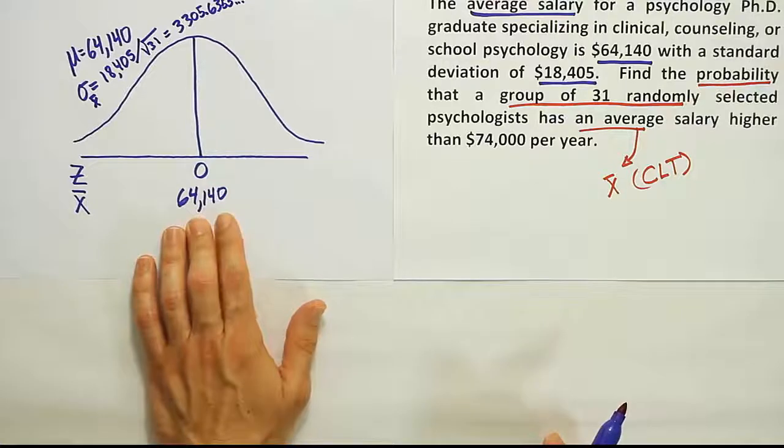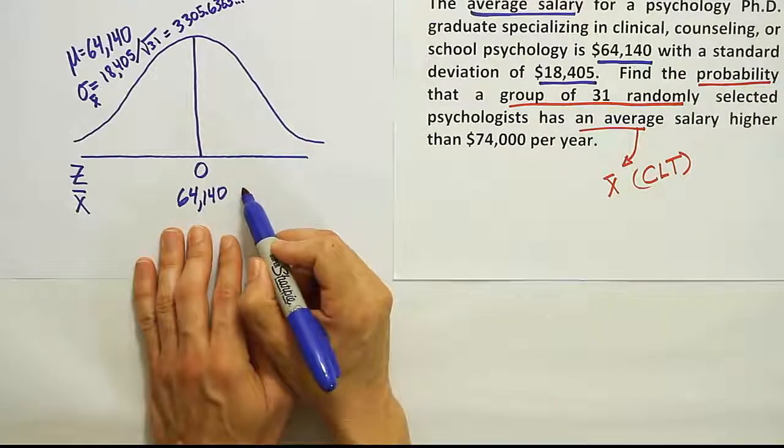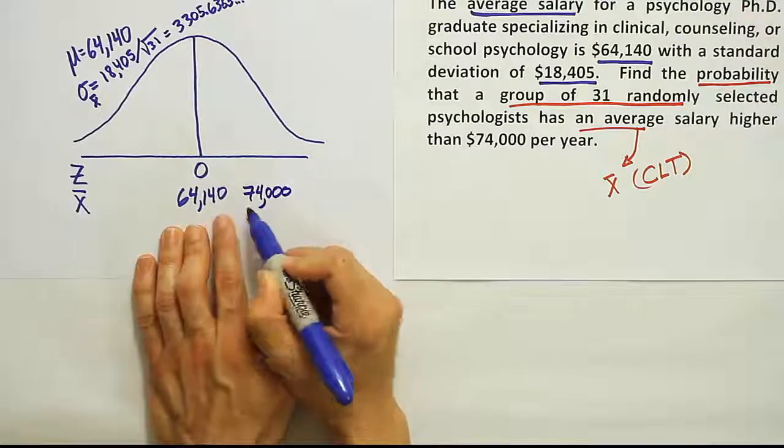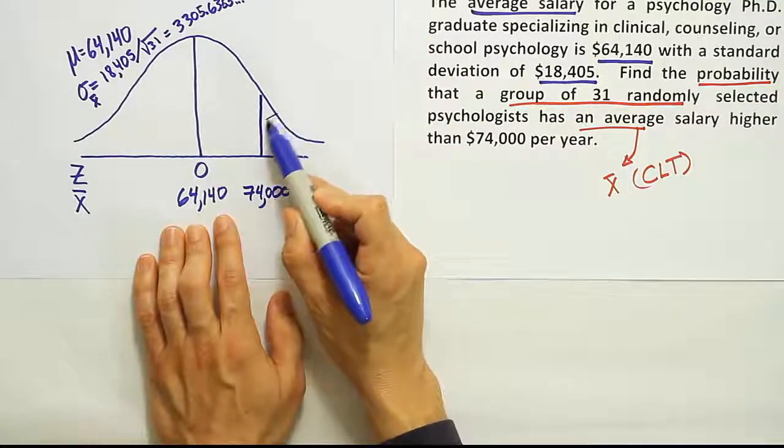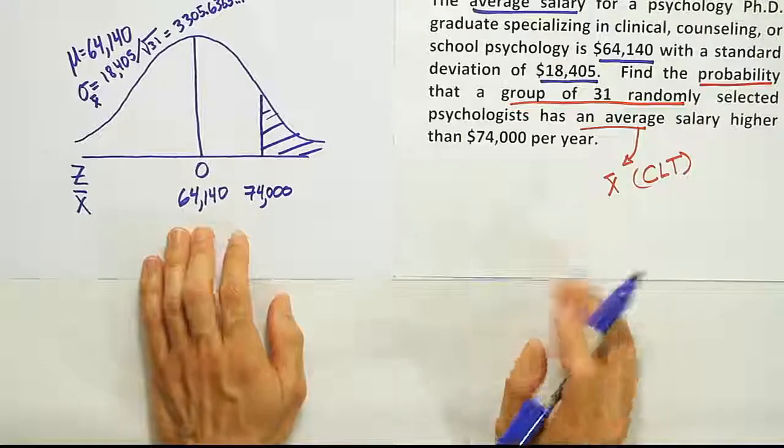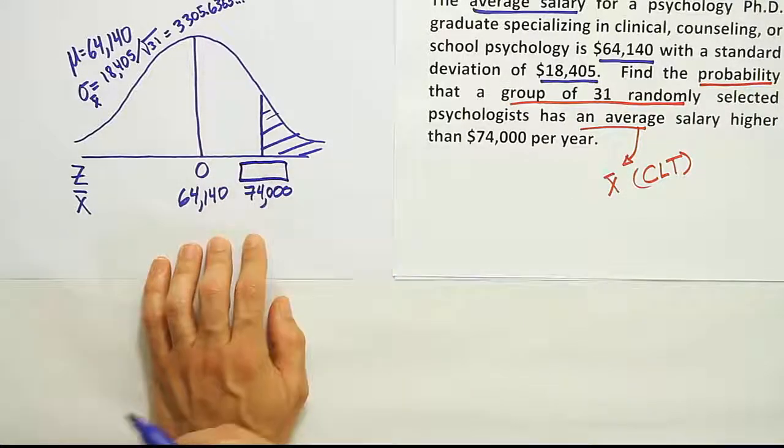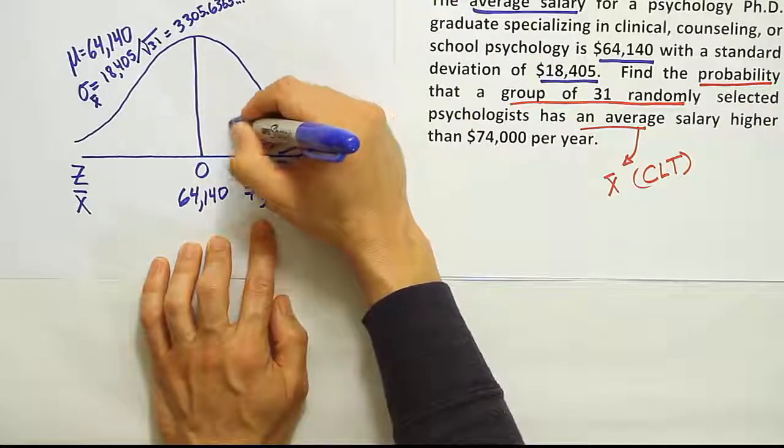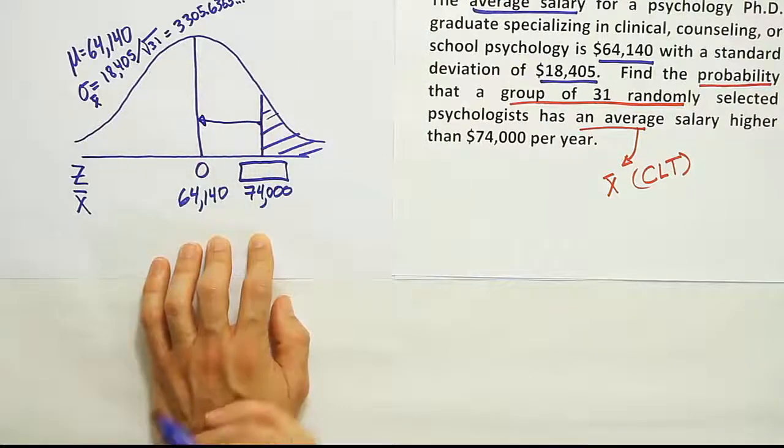All right, so let's talk about what we're actually looking for. We're looking for this average to be higher than 74,000. So 74,000 is clearly on the right of 64,140. So we're going to put a bar here on the curve and shade to the right because we're looking for that area. And to get that area, now all we have to do is convert this number into a z-score and look that up on the chart, right? When we look it up, we're going to end up with the number from here to here, right? The area for that part. And we'll have to do some work to get the area in the tail.